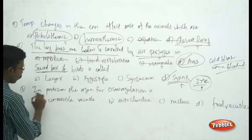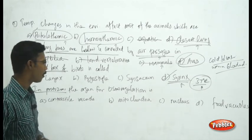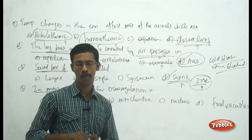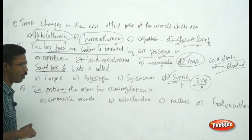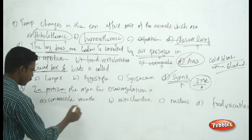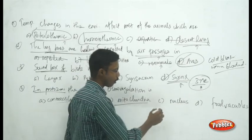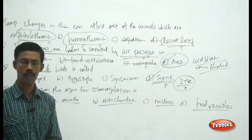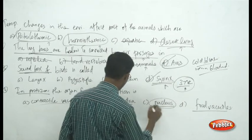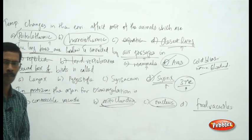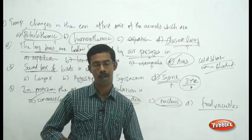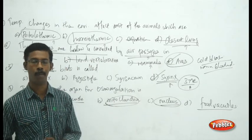See the last question: in Protozoa such as amoeba, the organ for osmoregulation is... The choices are contractile vacuole, mitochondria, nucleus, and food vacuole. Food vacuole stores food, not osmoregulation. Nucleus and mitochondria are organelles not involved in osmoregulation. The correct answer is the contractile vacuole, which is involved in osmoregulation in Protozoa such as amoeba and Plasmodium.